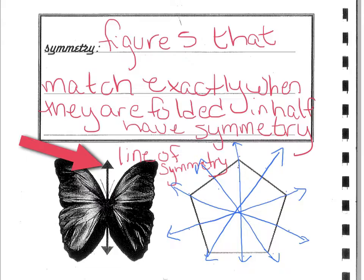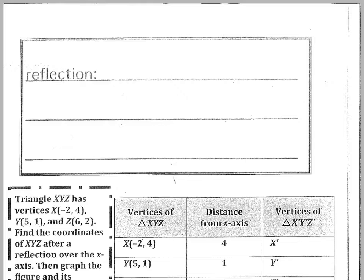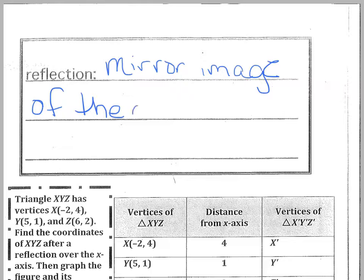When you're looking at figures, you're going to want to see if they have a line that you could draw that would have symmetry. Now let's go to the next page and write the definition of a reflection. A reflection is a mirror image of the original figure. We use a line of reflection to be able to make a reflection.